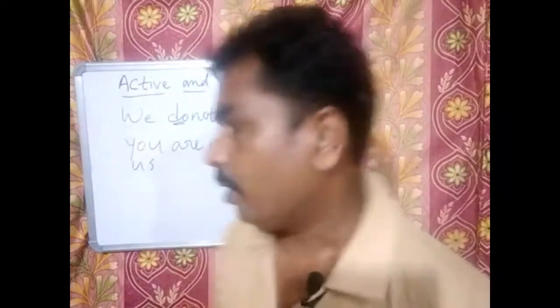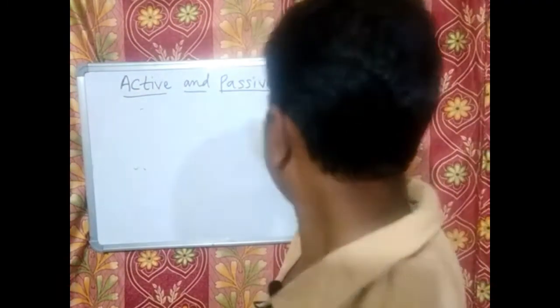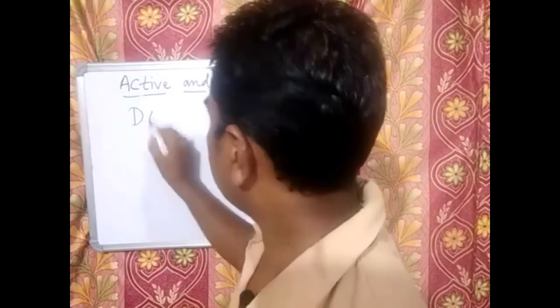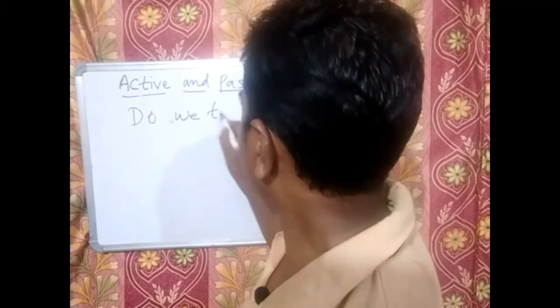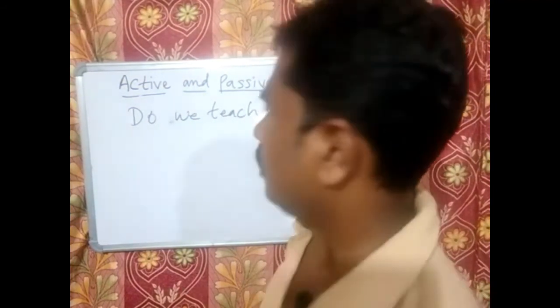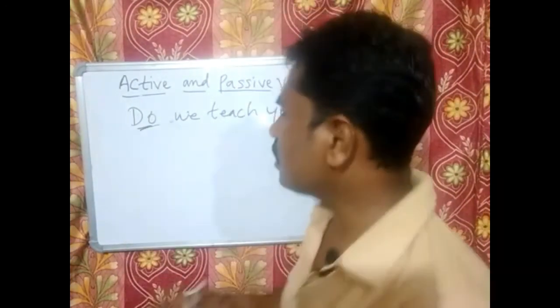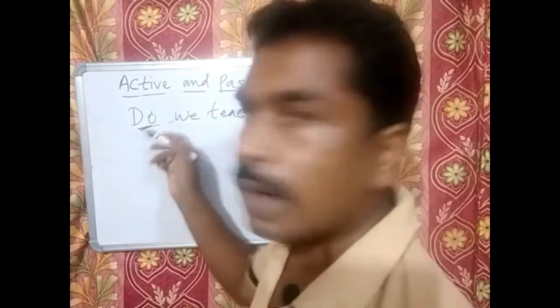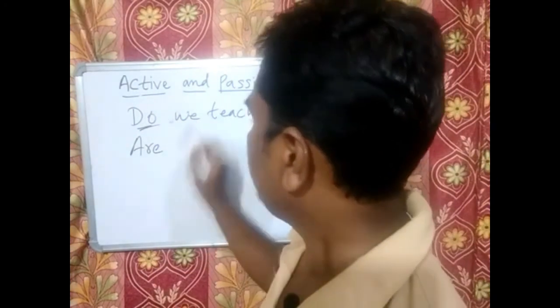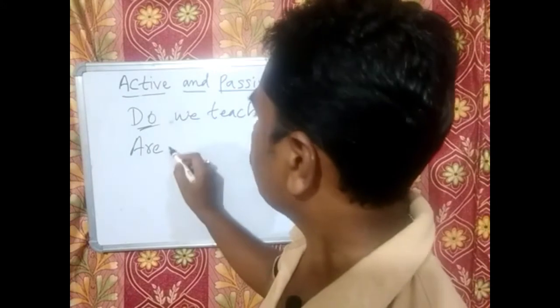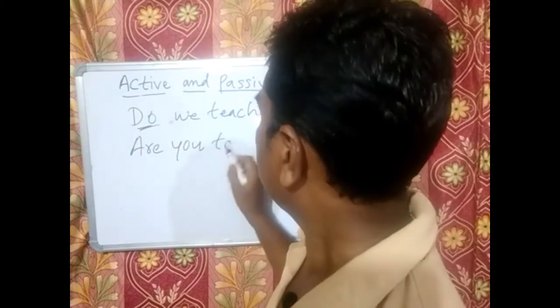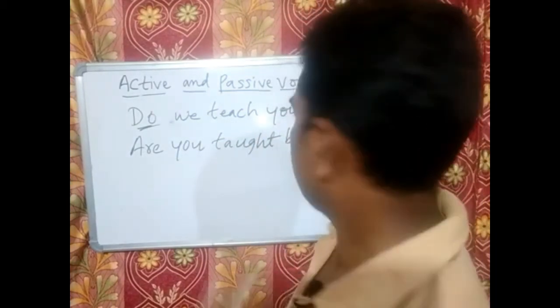Now let us move to interrogative sentences. If it is a question sentence — for example, 'Do we teach you?' — in place of 'do,' we have to replace it by be-words, just as we did in negative sentences. 'You' will become the subject in passive. So the passive form is: Are you taught by us? Like that you can change an interrogative sentence.